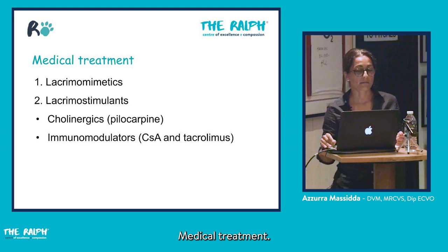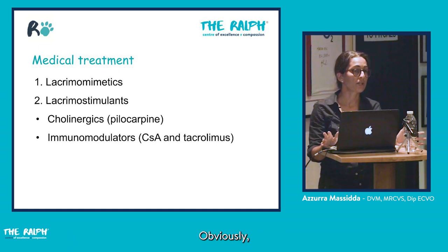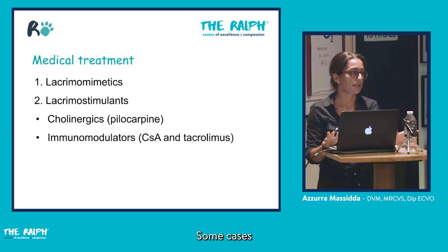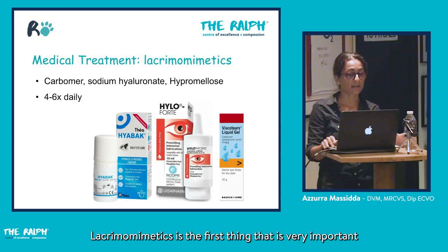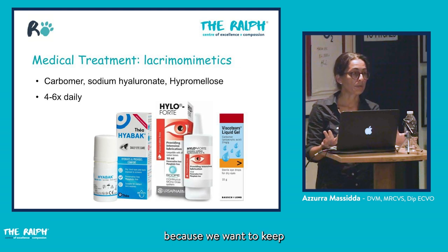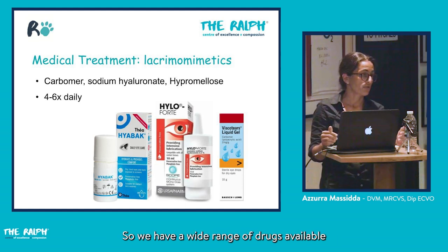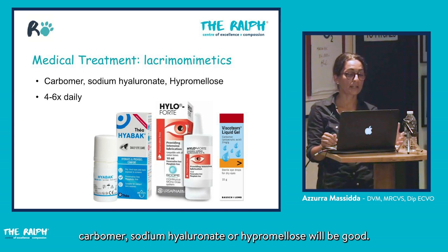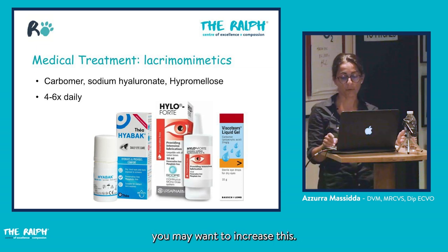For medical treatment, the most important categories are lacrimomimetics and lacrimostimulants. An antibiotic may be added if there is a secondary bacterial infection. Lacrimomimetics are important to keep the eye comfortable until immunomodulant drugs start working. Products containing carbomer, sodium hyaluronate, or hypromellose are suitable, normally administered 4 to 6 times daily, increased depending on severity.